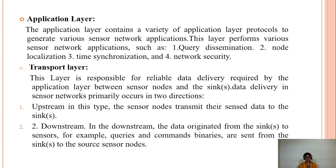The application layer contains a variety of applications and performs sensor network functions like query dissemination, node localization, time synchronization, and network security. The transport layer is responsible for transmitting data between sensor nodes and sinks. Delivery in sensor networks has two directions: upstream — sensor nodes transmit sensor data to sinks — and downstream — the opposite, from sinks to sensors.